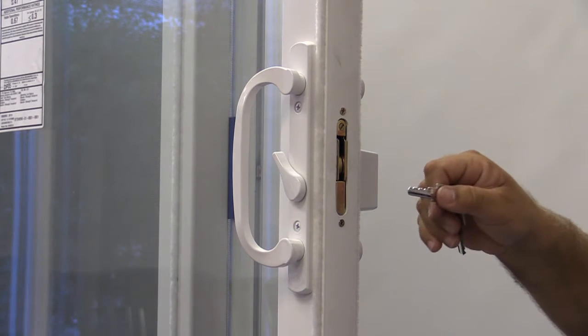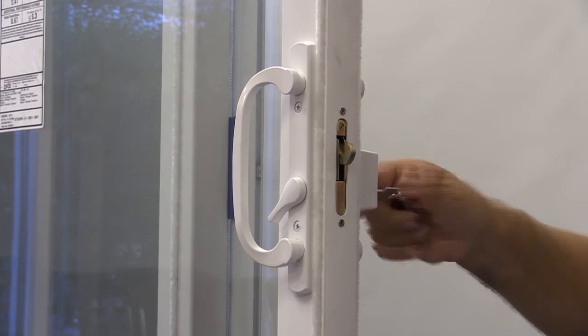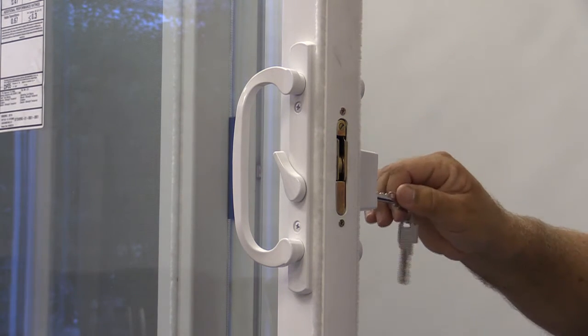Check to see that the key can be removed. It should now operate the keeper and the thumb latch properly and be easy to remove.